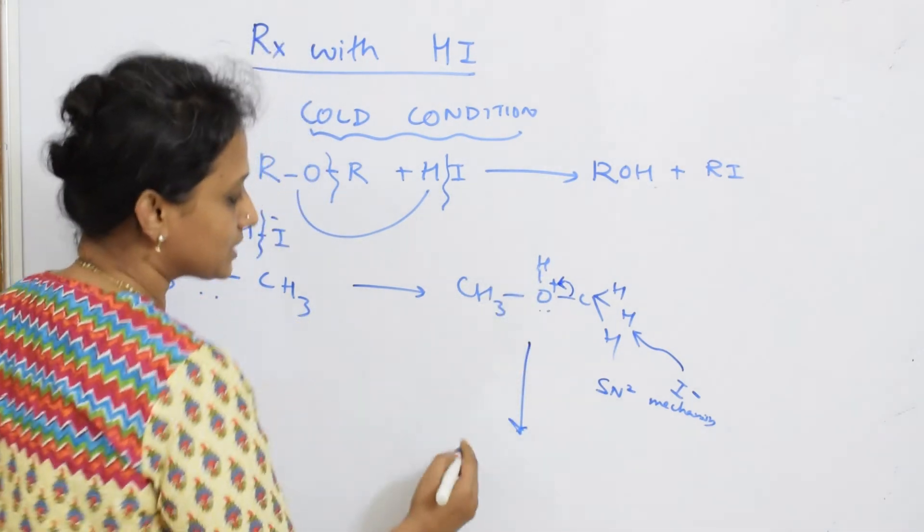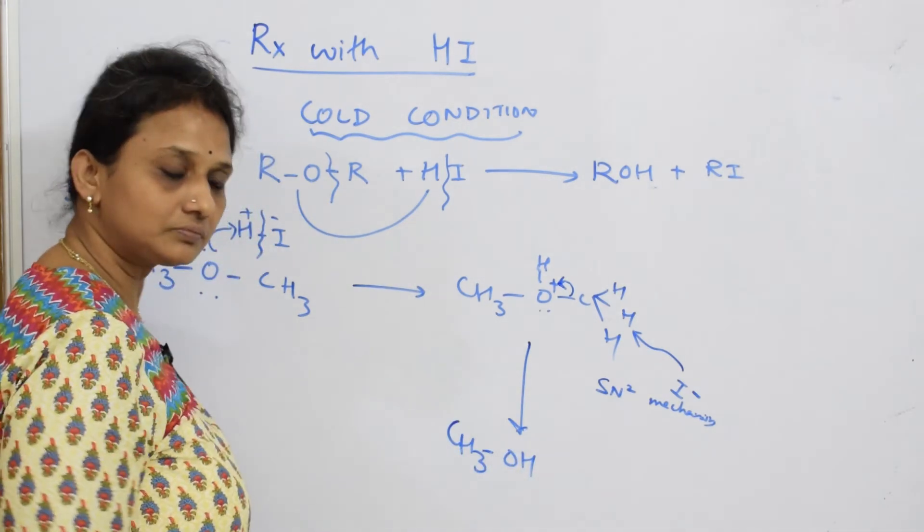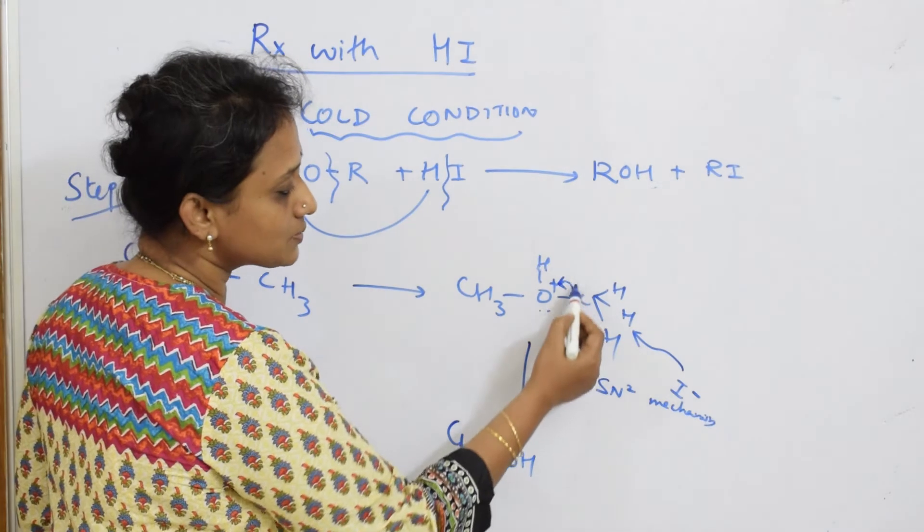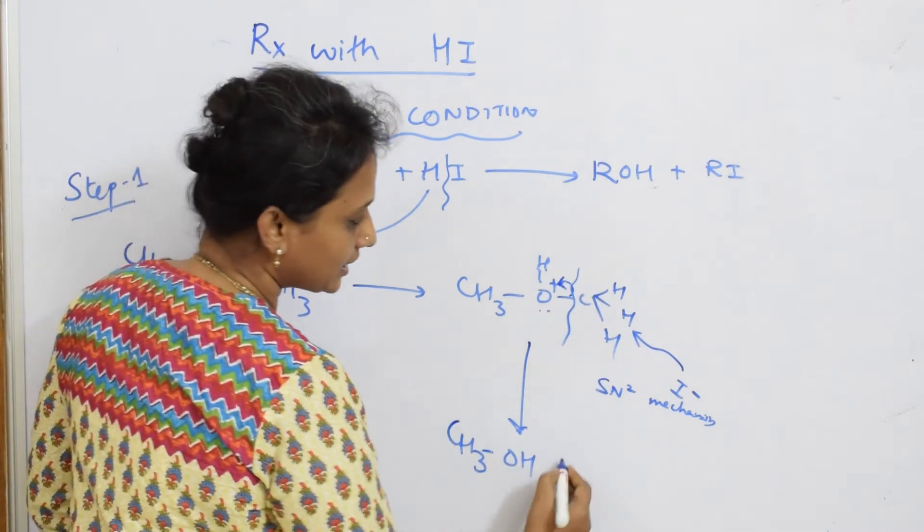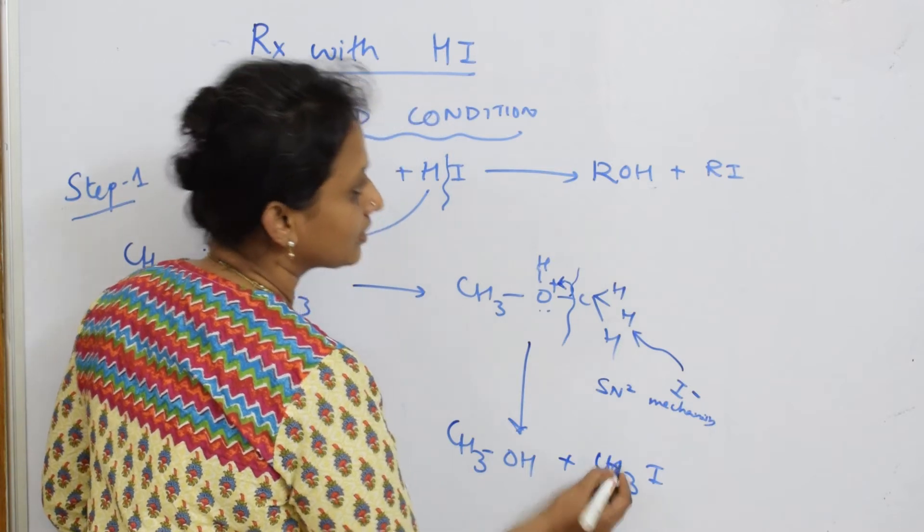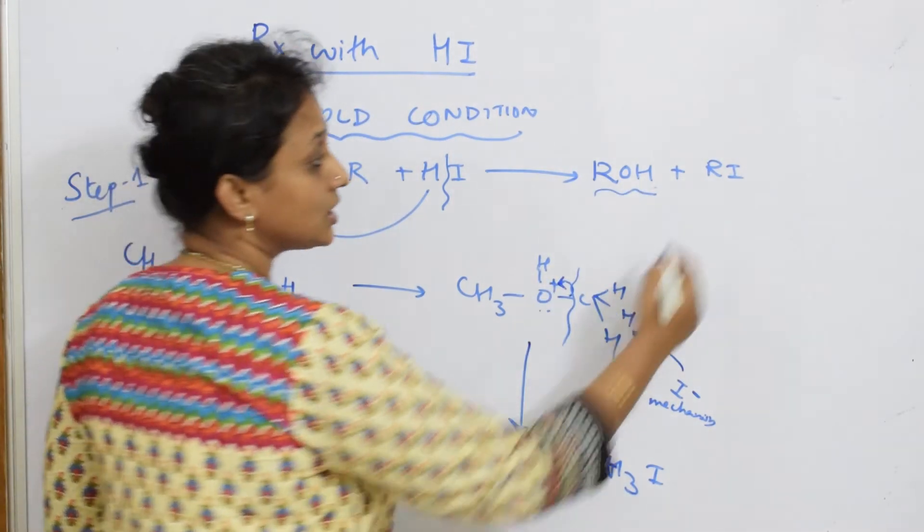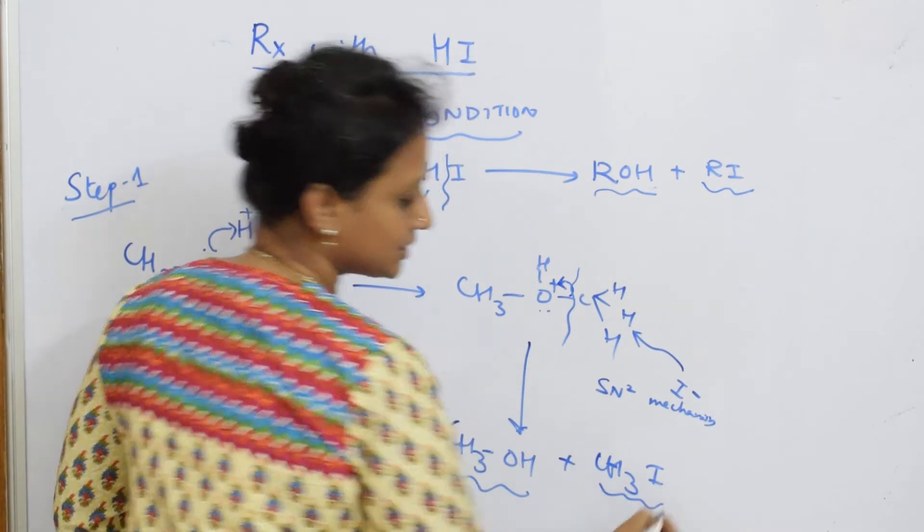So now what happens? What do you get? This particular bond—you get CH3OH. CH3OH. Now, already this bond has broken up. What do I get? CH3I. Look here: ROH is CH3OH, RI is CH3I.